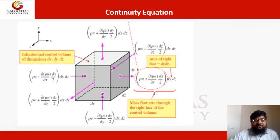To derive the continuity equation, let us take an elemental control volume of length dx, dy, and dz. Across the faces of it, the mass is entering and exiting.